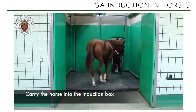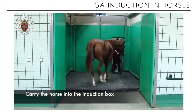This is what we call an induction box — a well-padded box with all walls, the door, and the floor padded. Horses are big animals weighing sometimes half a ton, so you have to make sure that when you induce anesthesia and all the limbs give out, you are doing it safely for the animal and for the personnel.